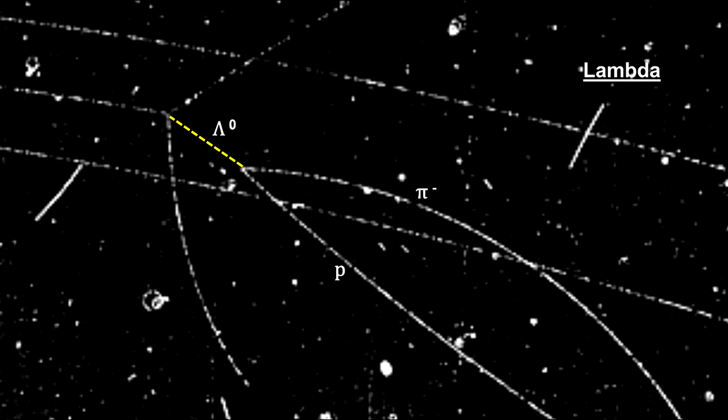The particle was expected to live for about 10 to the minus 23 seconds, but actually survived for 10 to the minus 10 seconds. The property that caused it to live so long was dubbed strangeness and led to the discovery of the strange quark.